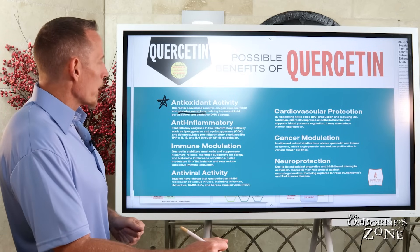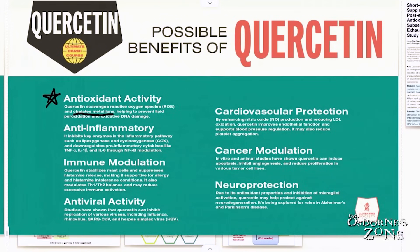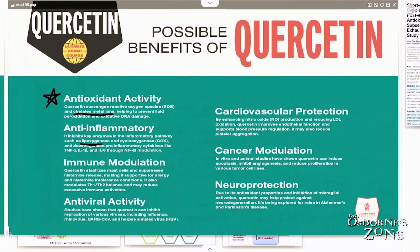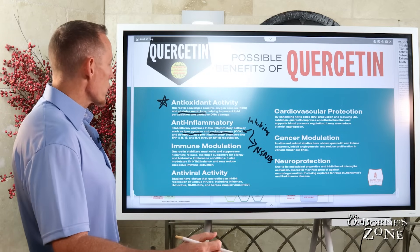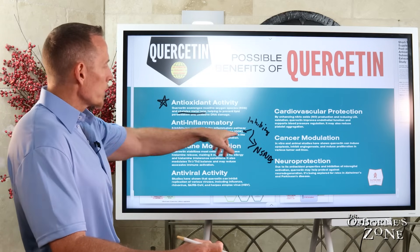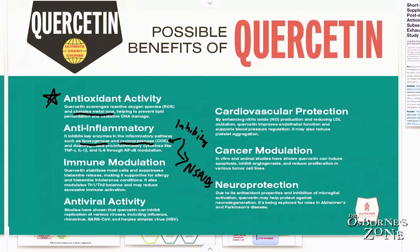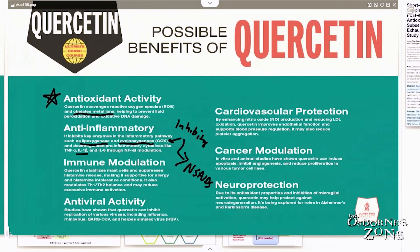It acts as an anti-inflammatory. It blocks several key enzymes like lipid oxygenase and COX, or cyclooxygenase. Those of you who have heard the term COX inhibitor — that's basically what NSAIDs do: ibuprofen, aspirin — these all block this enzyme. Well, quercetin naturally blocks that enzyme without the potential side effects.